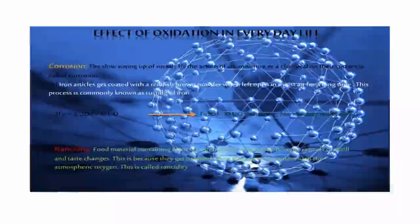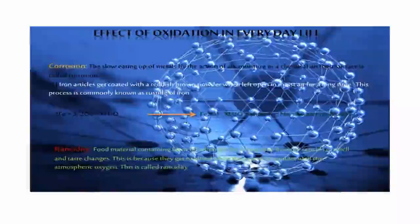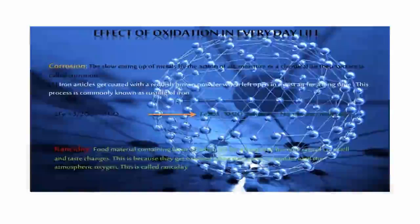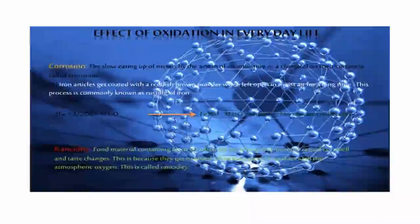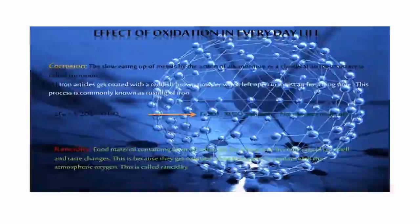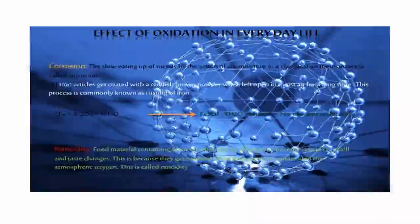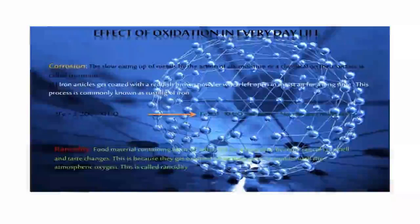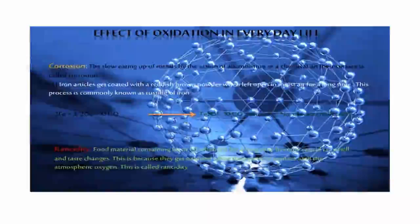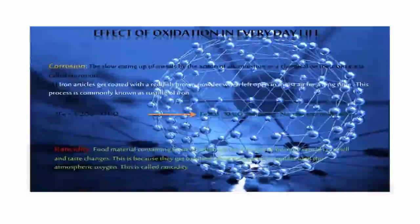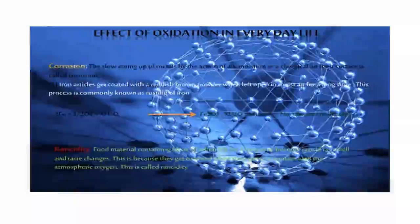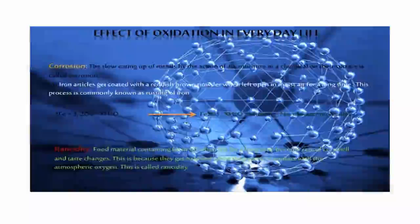Rancidity: Food materials containing fats and oils get spoiled after exposure to air. It is because of the formation of oxides. We may flush nitrogen into the packets of chips to prevent rancidity.